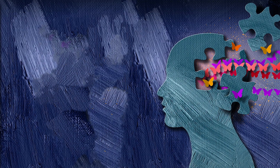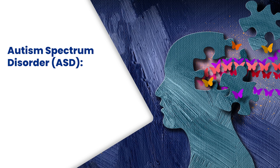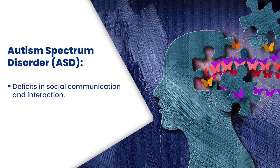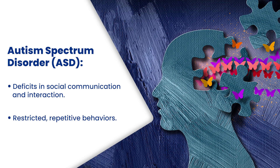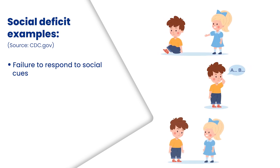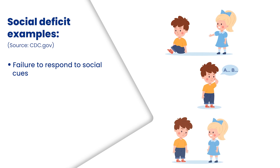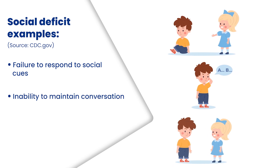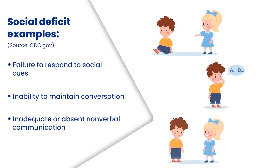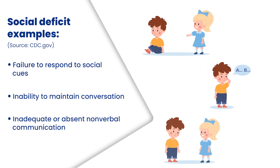According to the American Psychiatric Association, ASD is characterized by persistent deficits in social communication and interaction, as well as restricted, repetitive behaviors. Social deficits can present in various ways, such as failure to respond to social cues or to maintain conversation, or inadequate or absent nonverbal communication, such as lack of facial expression.